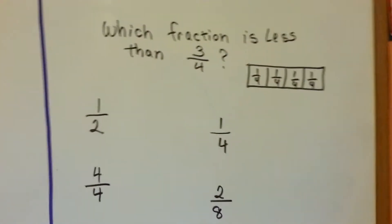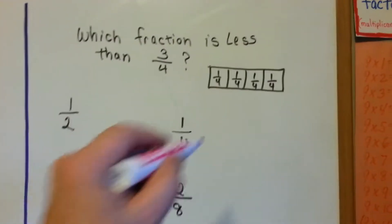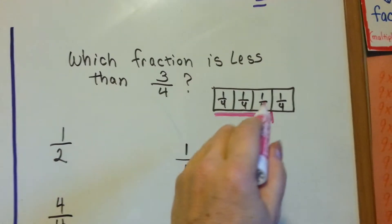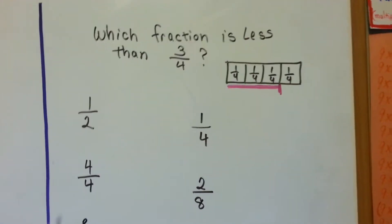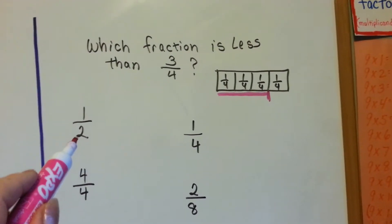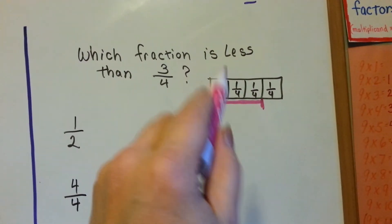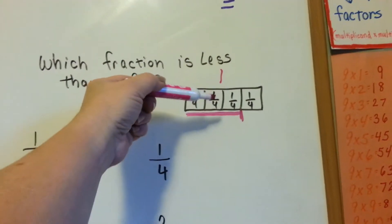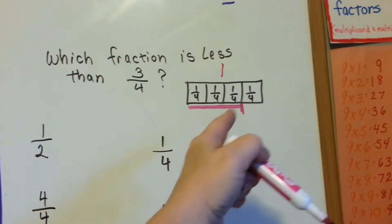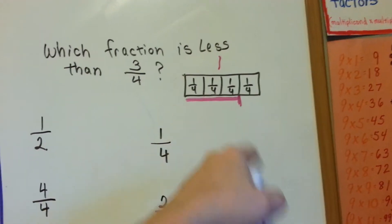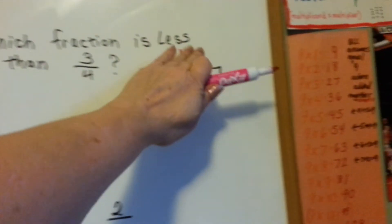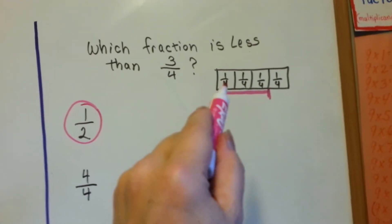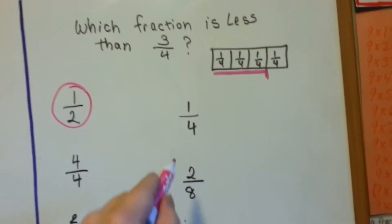Now let's see how you can do on this one. Which fraction is less than three-fourths? Here's three-fourths: one-fourth, one-fourth, and one-fourth. Is half smaller than three-fourths? Here's half — yes, that is smaller than three-fourths. Is one-fourth smaller than three-fourths? Yes, one-fourth is smaller.